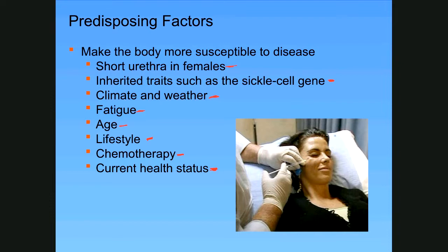Current health status is a major predisposing factor. If your body is busy fighting one disease, it may not be able to dedicate enough resources to fight another. We see this with COVID — someone who contracts the virus but has pre-existing conditions is at a much higher risk for severe illness. A person who is diabetic, has had strokes, and is on blood thinners is in the super-high-risk category. Current health status is probably one of the largest predisposing factors, and some of those factors we can control and some we cannot.